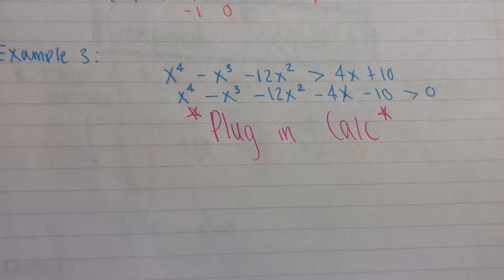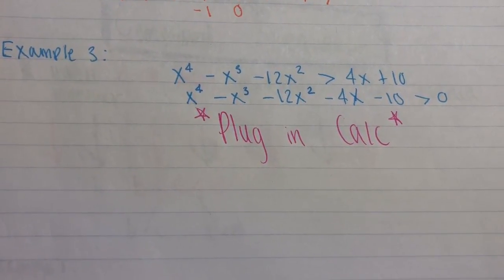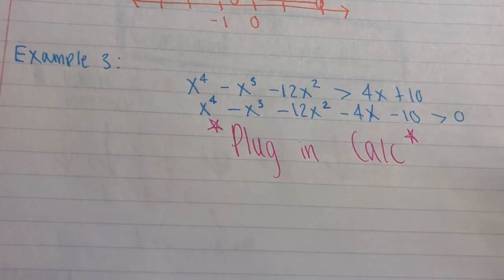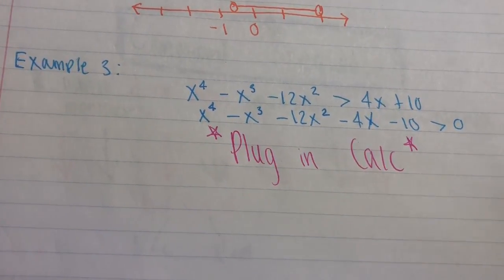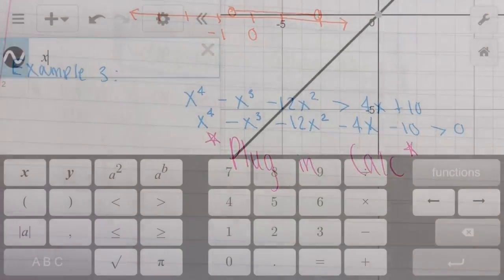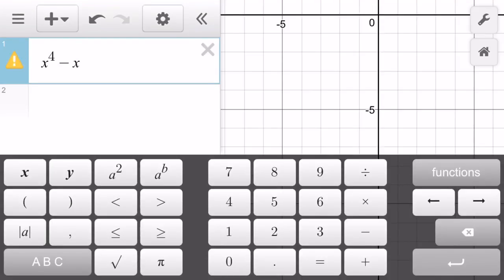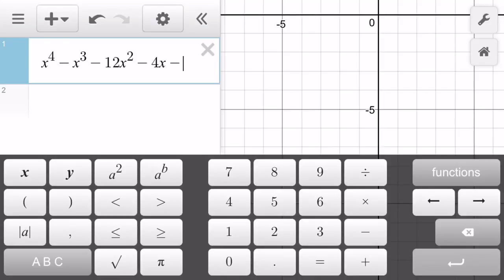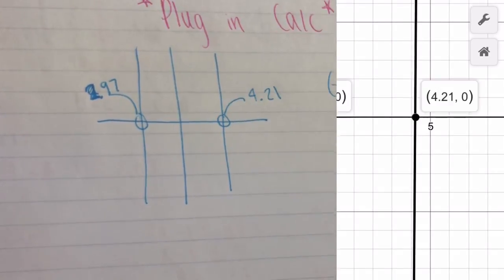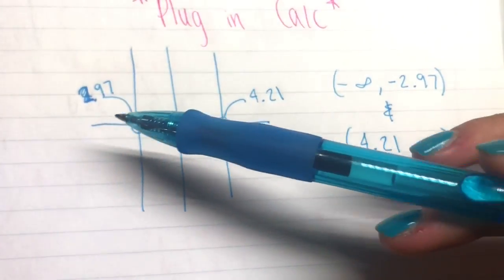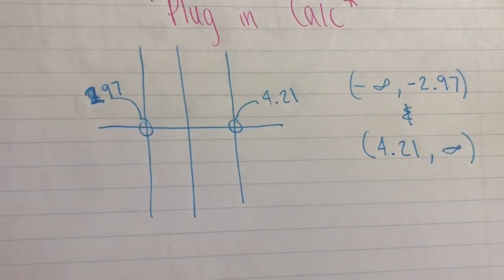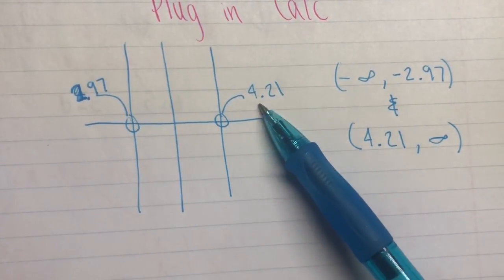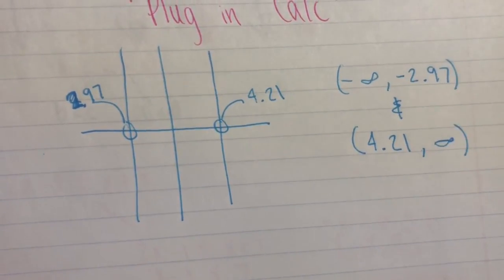For the third example, we have x⁴ − x³ − 12x² > 4x + 10. Instead of solving algebraically, we subtract 4x and subtract 10 to set the expression greater than zero, then graph it to make things much easier. Using Desmos with decimal intersections, we find intersections at 2.97 and 4.21, giving the answer: (negative infinity, −2.97) ∪ (4.21, infinity) — an open interval.